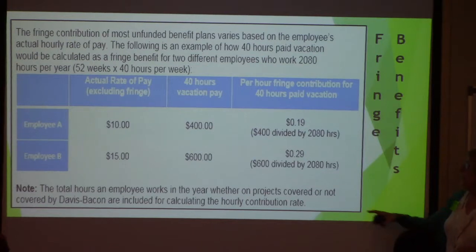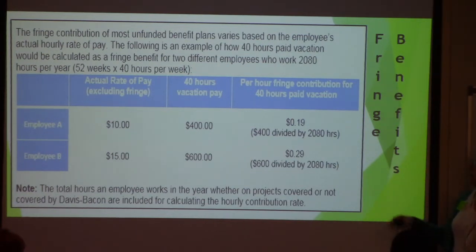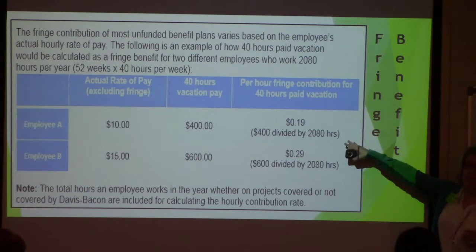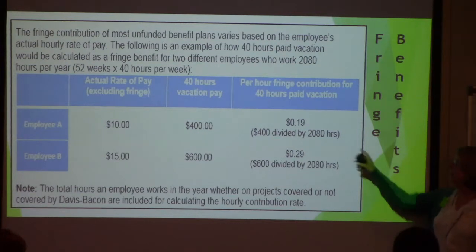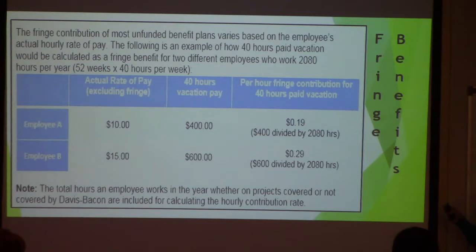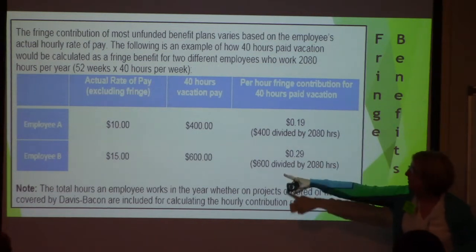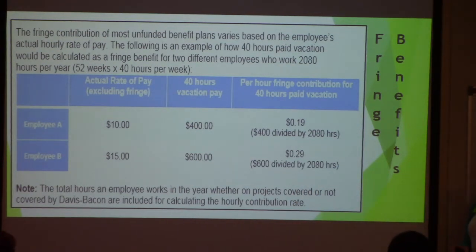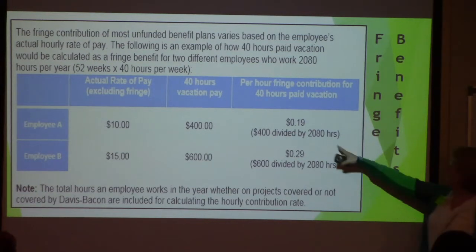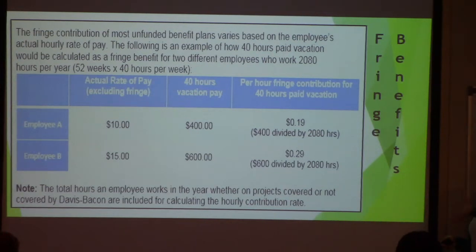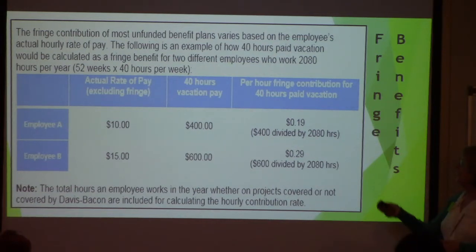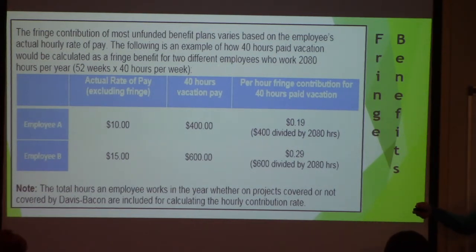Here's a fringe calculation for an unfunded benefit. Say Employee A earns $10 per hour and gets a 40-hour vacation, which equals $400. Divide $400 by 2,080 standard annual hours — that gives $0.19 per hour fringe. If they also make $0.15 fringe from another benefit, I now have $0.29 total fringe for this person. If overtime is involved, note that vacation is for straight time only — for overtime hours you must either pay cash or ensure fringe is paid for every hour.